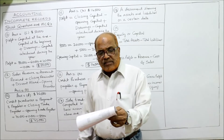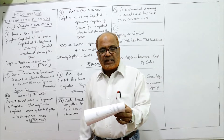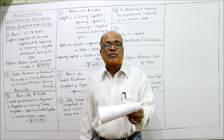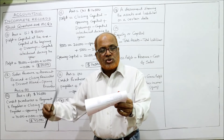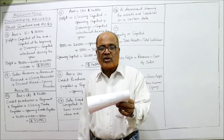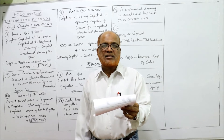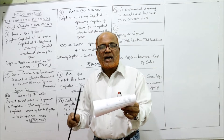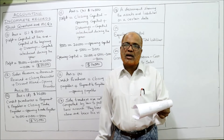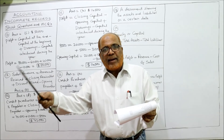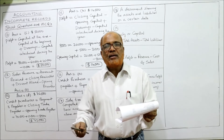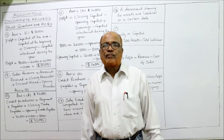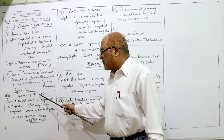Problem 14: a business provides the following information. On 1st April 2016 trade payables are $8,000; on 31st March 2017 trade payables are $10,000. Payments to payables in the year ended 31st March 2017 were $70,000. What were the credit purchases for the year ended 31st March 2017? Remember the formula: amount paid to payables + closing payables − opening payables. The answer for problem 14 is D: $72,000.